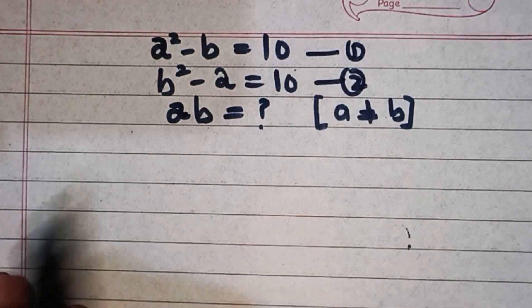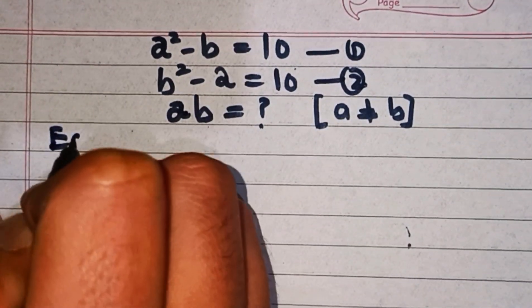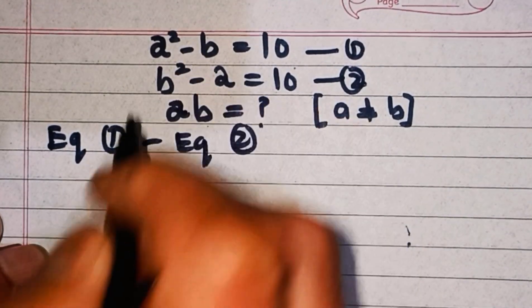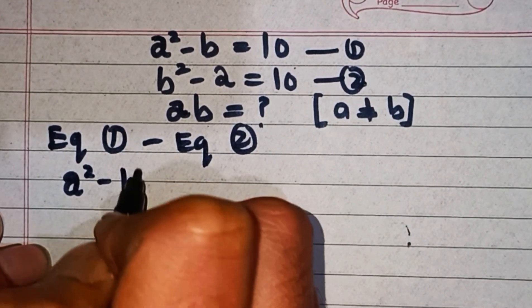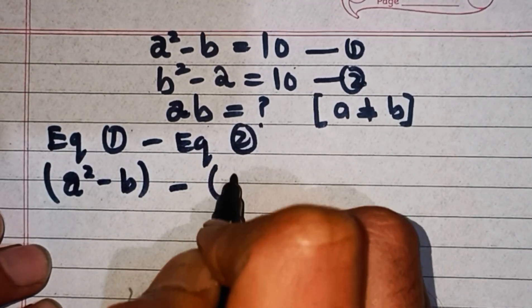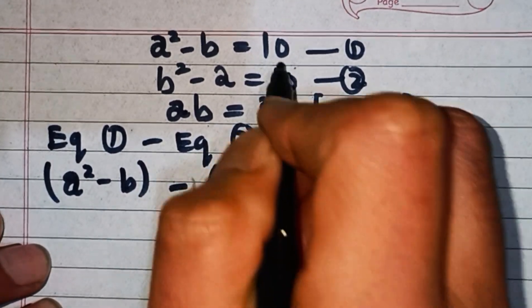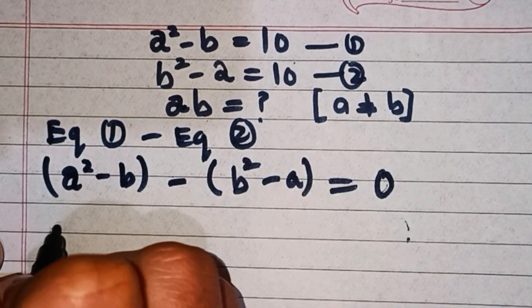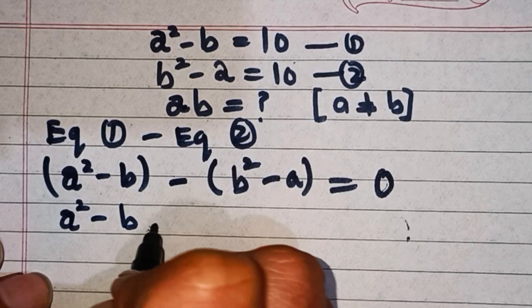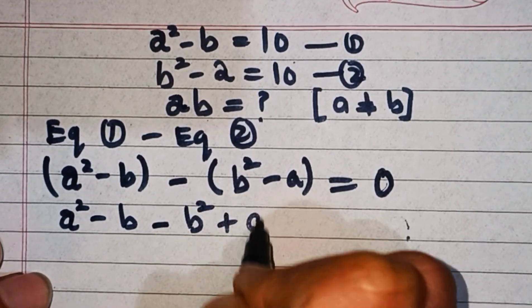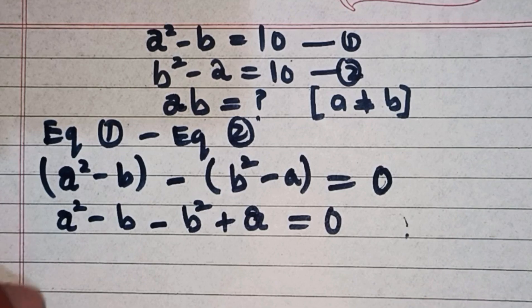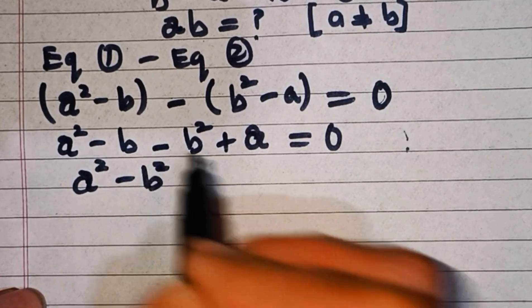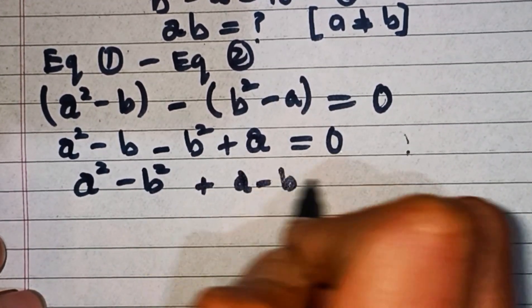In order to find the value of ab, first of all we'll subtract equation one from equation two. From the left hand side we have a² - b, then equation two is b² - a, equaled 10 - 10, which is equal to 0. Opening the bracket: a² - b - b² + a = 0. We can rewrite this as a² - b² + a - b = 0.